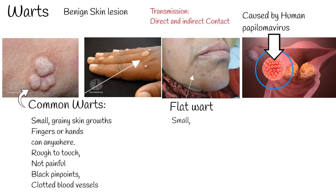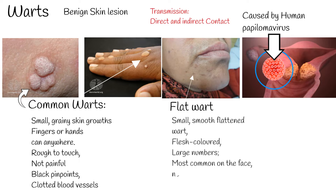Flat wart: a small, smooth, flattened wart, flesh-colored, which can occur in large numbers. Most common on the face, neck, hands, wrists, and knees.